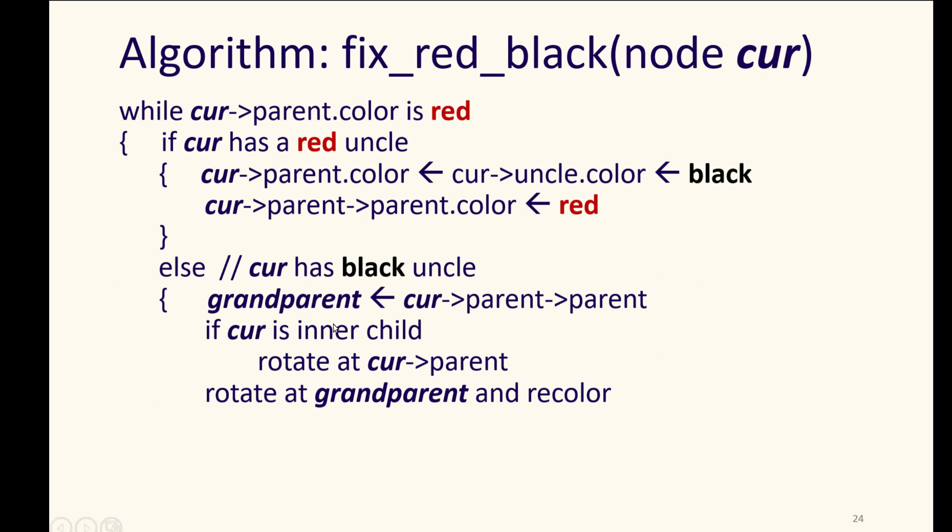So if current was an inner child, we'll have to do one rotation inside here, and then another rotation outside. If current was an outer child, we'll skip this first rotation, and only do this last rotation here.